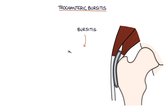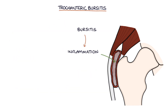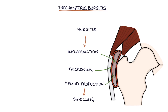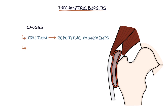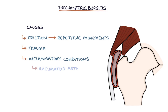Bursitis refers to inflammation of a bursa, and this causes thickening of the synovial membrane and increased fluid production, causing swelling of the bursa. The inflammation can have several causes: friction from repetitive movements, trauma to the bursa, inflammatory conditions such as rheumatoid arthritis, or infection, referred to as septic bursitis.